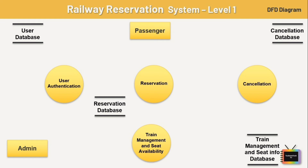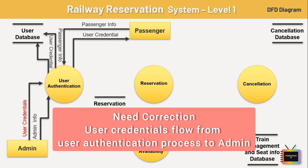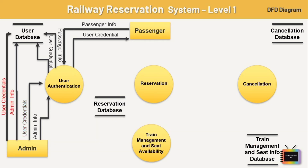Now let's see how data will flow in this diagram. First, the passenger will share their information with the user authentication process, which will return user credentials to the passenger. Both the passenger details and credentials will be stored in the user database. Similarly for admin — they share information with the user authentication process and receive user credentials in return, and the same information gets stored in the user database.